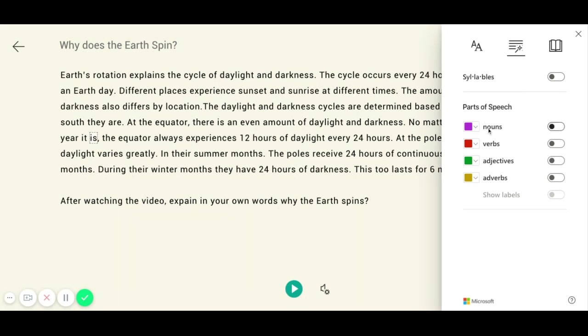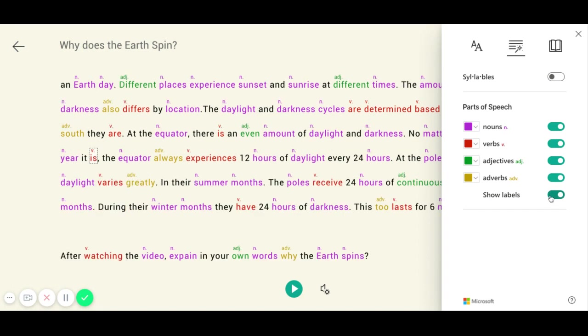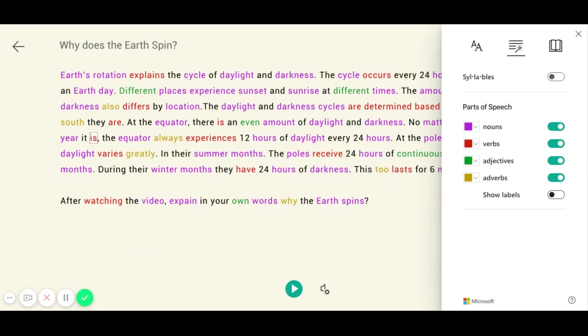Below that are parts of speech. I can turn on highlighting for nouns in this color. I can clearly see all the nouns. I can also turn on the verbs, adjectives, or adverbs. I can turn on more than one at once or turn them all on if I'd like. I can show the labels. Even with things highlighted, I can still use the play function.